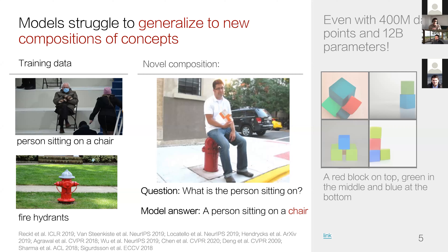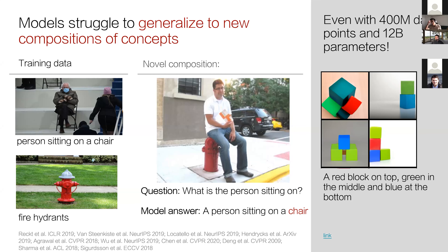Even the latest 12-billion parameter models released by OpenAI earlier this year, trained on 400 million images, still fail to generalize to novel compositions. This suggests the problem is representational and not just a data problem.